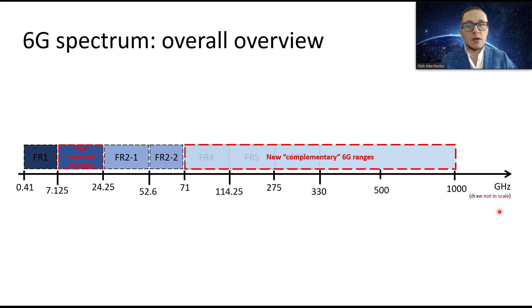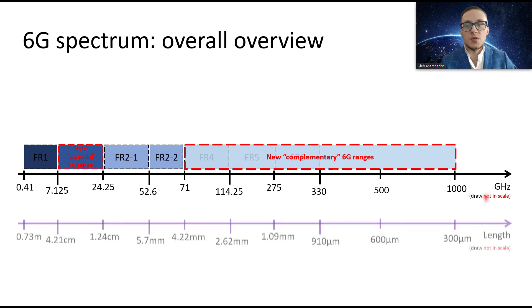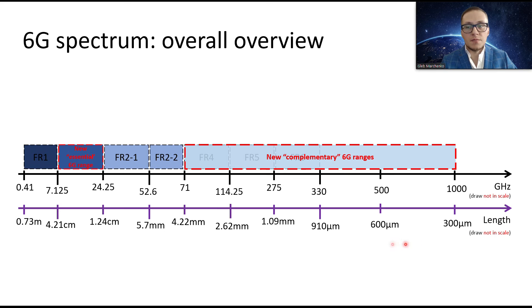Now let's translate our scale from frequency from gigahertz to wavelengths. And what we can see, we can see that this range we may call centimeter waves, so FR1 and FR3. Here is millimeter waves starting from FR2 and until, I think, until FR6.